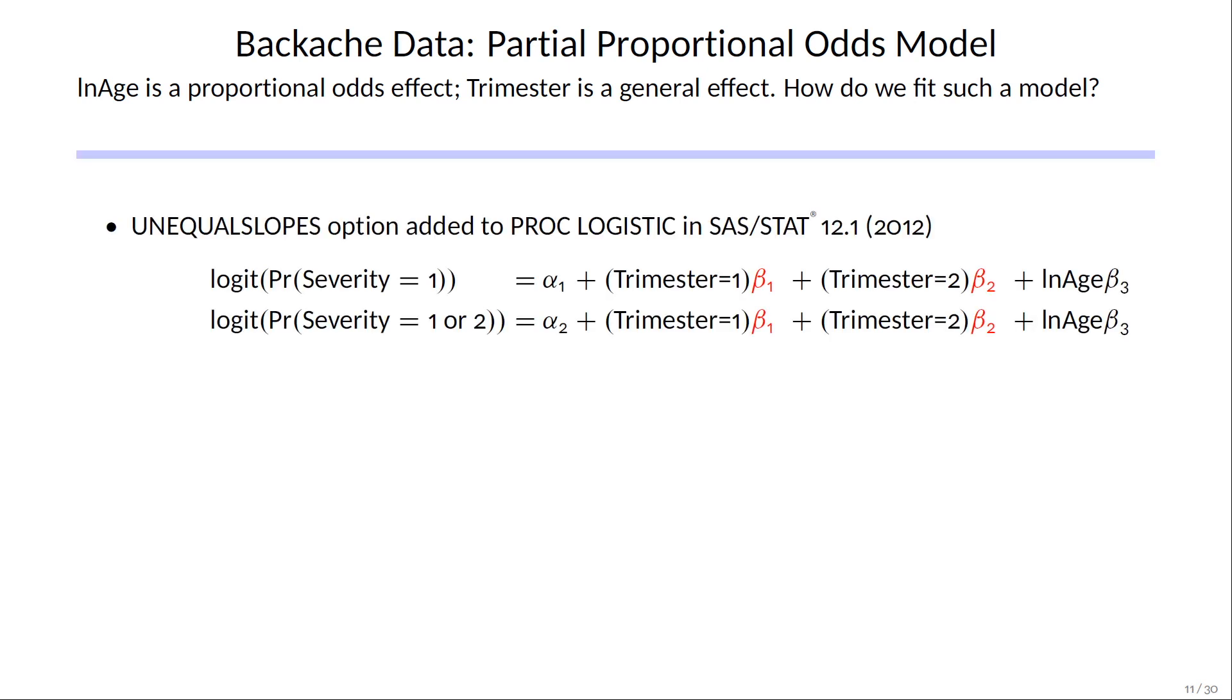To do this in PROC LOGISTIC, we added an unequal slopes option to the model statement several years ago in SAS STAT 12.1. It can replace some or all of the slope parameters in a proportional odds model, with more general parameters specific to each response function.